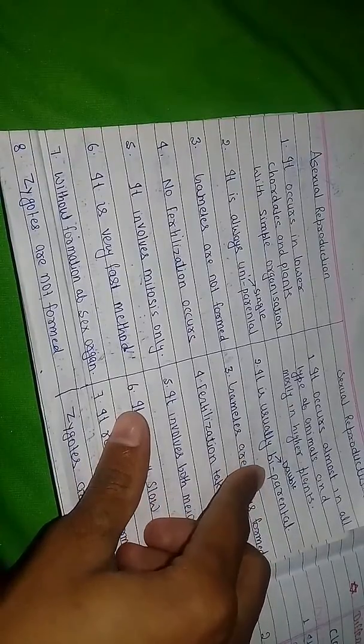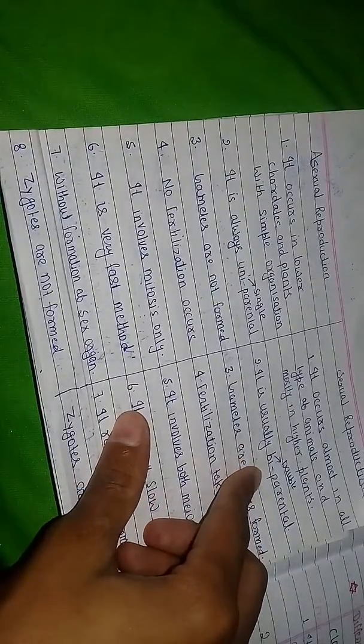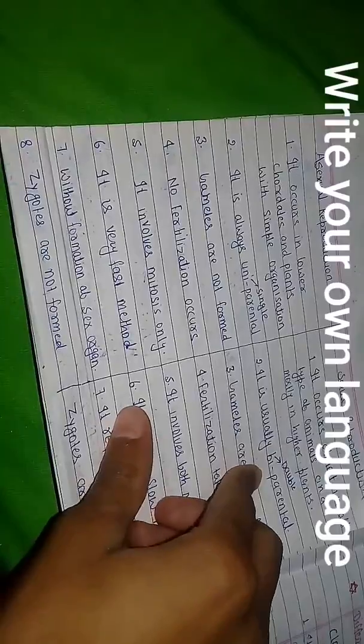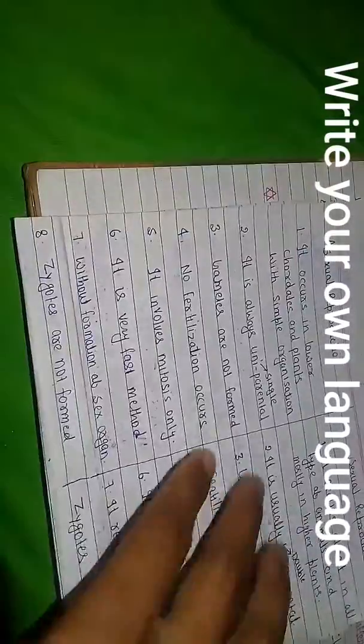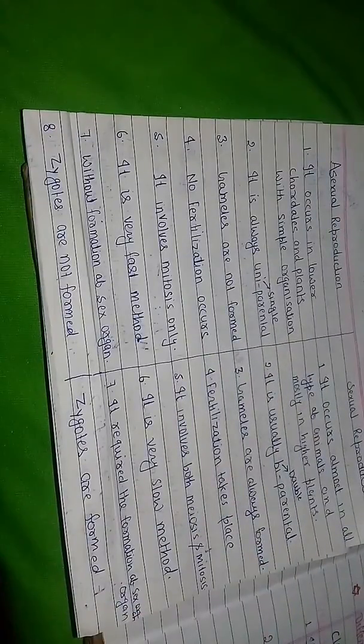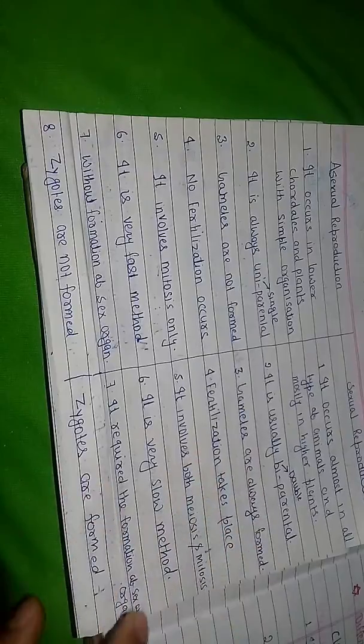It means double parental, male and female are required in sexual reproduction. And third one is: gametes are not formed in asexual reproduction. Gametes are not formed. But you know, in sexual reproduction, gametes are always formed.